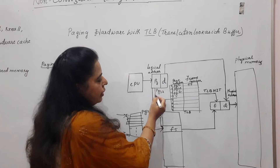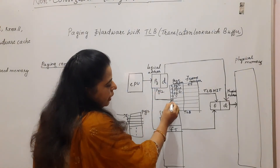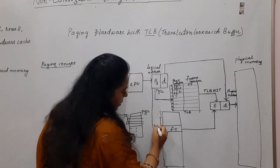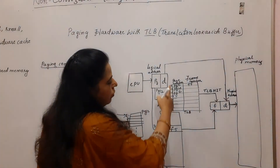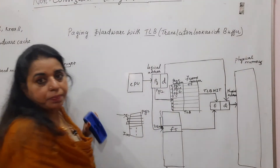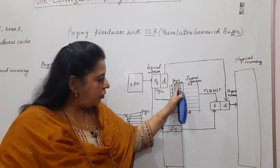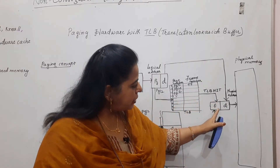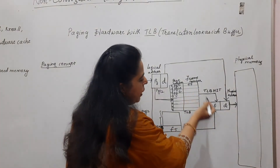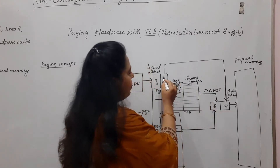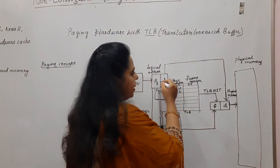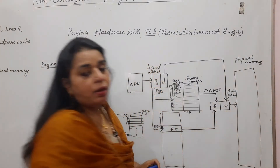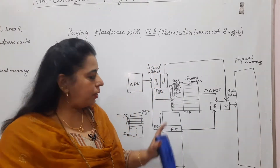Whenever the CPU generates the logical address, it first searches in the TLB. If the page number is found, we call it a TLB hit — access time is less. From that page number, you get the frame number. The frame number combined with the offset from the logical address forms the physical address, which points to the particular instruction in main memory.